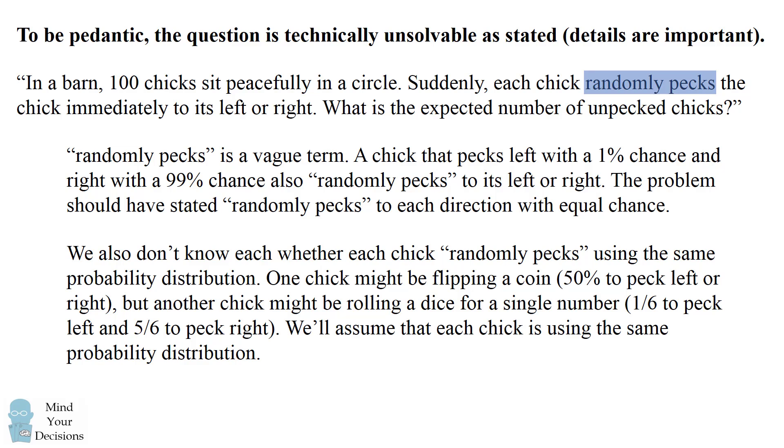Furthermore, we also don't know whether each chick randomly pecks using the same probability distribution. One chick might be flipping a coin, which means a 50% chance to peck left or right, but another chick might be rolling a dice for a single number, which means a 1-6th chance to peck left and a 5-6th chance to peck right.